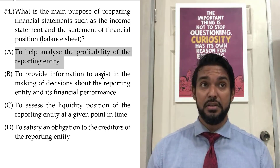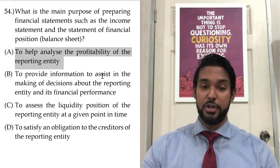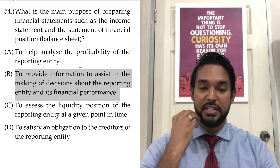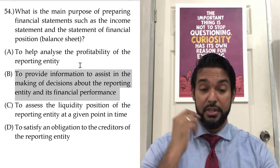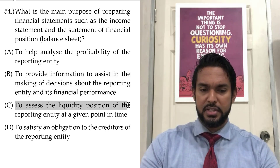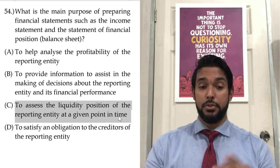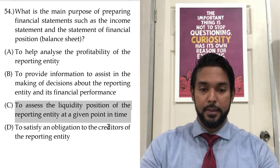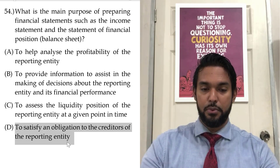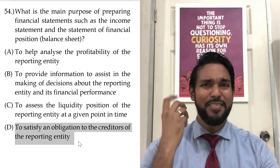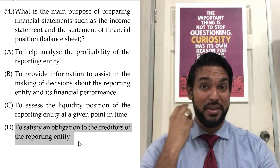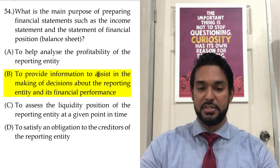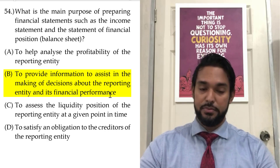Apart from profitability, we also have liquidity, activity, and if you go up to Cape level, shareholder gearing ratios. Option B says to provide information to assist in the making of decisions about the reporting entity and its financial performance — that seems to be on the money. Option C is to assess the liquidity position at a given point in time, and D is to satisfy an obligation to creditors. We don't necessarily have that obligation. So B is definitely the answer here.